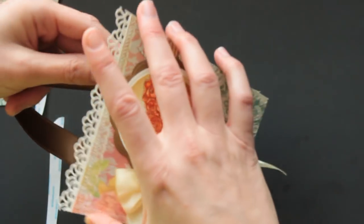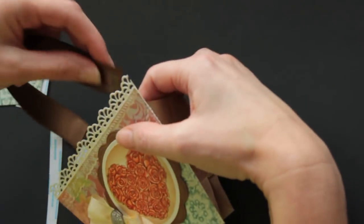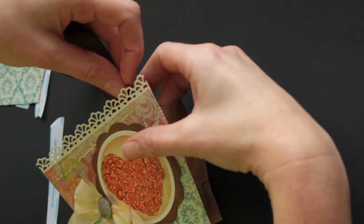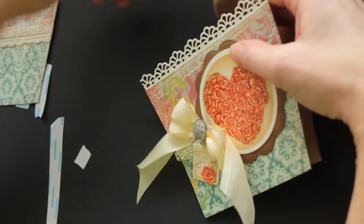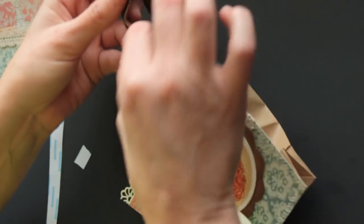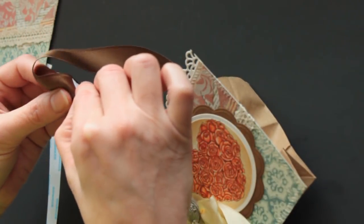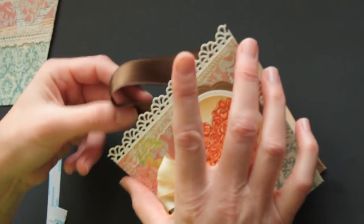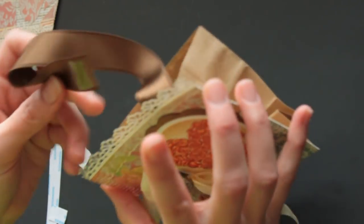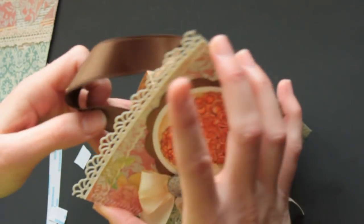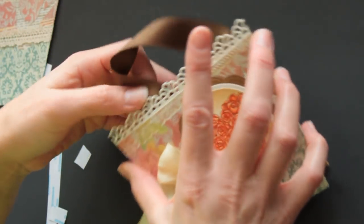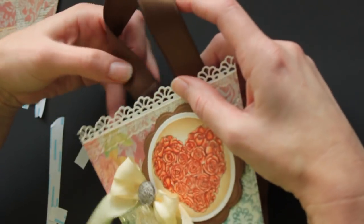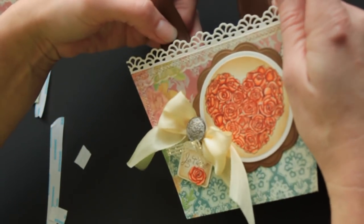I usually put it on before I put the lunch bag on, and then just adhere that on the inside of your bag so it looks even more like a little purse. You can see how it would be easier if the bag wasn't on there yet.